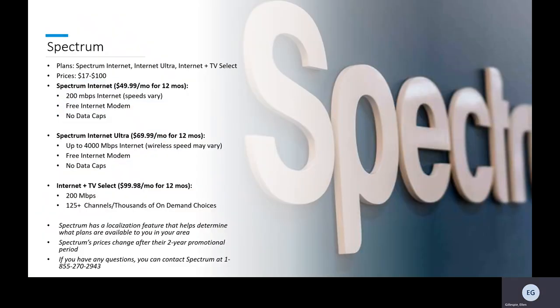Spectrum has multiple plans depending on what features you need and what prices you can afford. We're going to go over three of those plans: Spectrum Internet, Internet Ultra, and Internet Plus TV Select, with prices ranging from $17 to $100 a month. Spectrum Internet at $49.99 a month for 12 months has internet speeds at 200 megabits per second — though speeds may vary — and comes with a free internet modem and no data caps. Spectrum Internet Ultra comes at $69.99 a month, with speeds up to 4,000 megabits per second, a free modem, and no data caps.